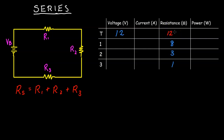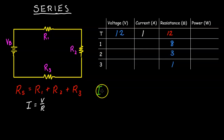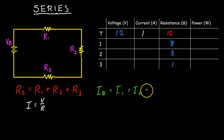To find the current we're going to use Ohm's Law, which states that current equals voltage divided by resistance. Taking 12 volts divided by 12 ohms, we get 1 ampere. In a series circuit it's important to remember that the current throughout the circuit is constant — the current through the battery equals the current through R1, R2, and R3. So all of these are 1 ampere.